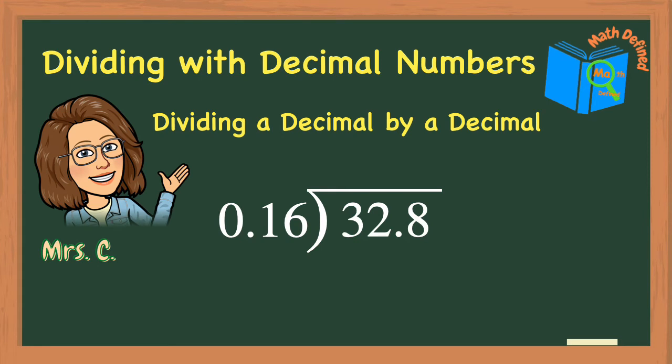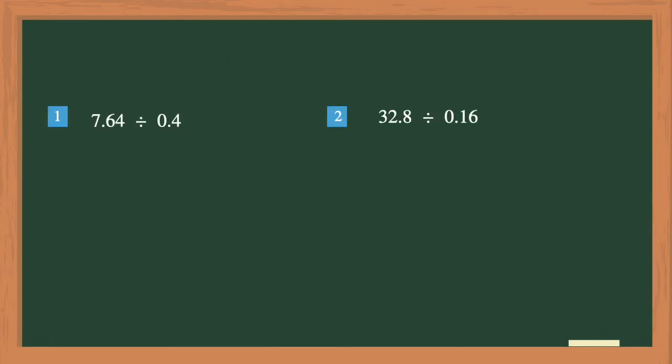Today's video will show you step-by-step how to divide a decimal number by another decimal number. Our first division problem is 7.64 divided by 0.4. The first step in solving this problem is to rewrite it using the long division box. The first value of 7.64 is the dividend, and we will place it inside of the long division box. The second value of 0.4 is the divisor, and it will go outside of the long division box.